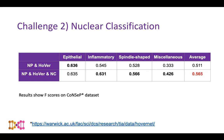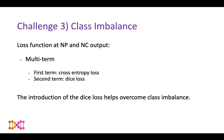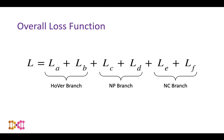For challenge three, the class imbalance, we again use a multi-term loss function at the outputs of both the nuclear pixels (NP) branch and the nuclear classification (NC) branch. Each branch uses two terms: cross-entropy loss and dice loss, summed together. The inclusion of the dice loss specifically helps overcome the class imbalance problem. Overall, combining both terms at each of the three branch outputs gives six loss terms summed together.